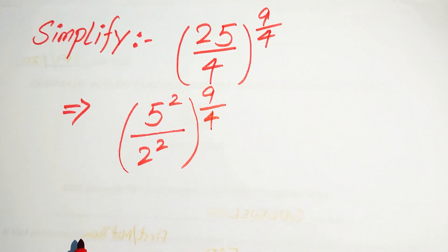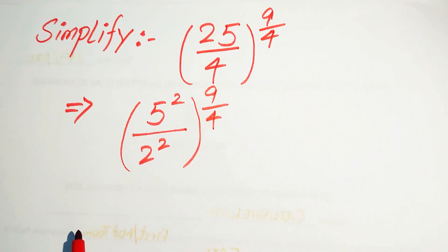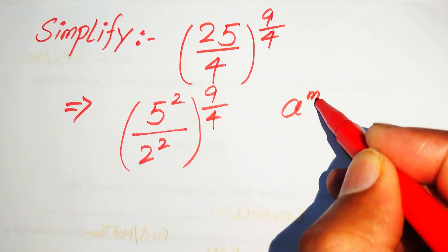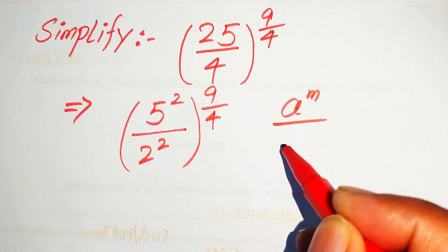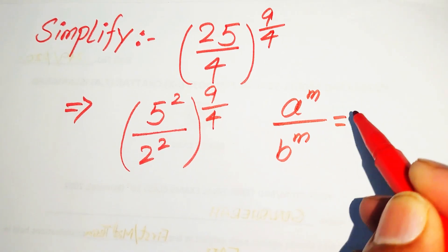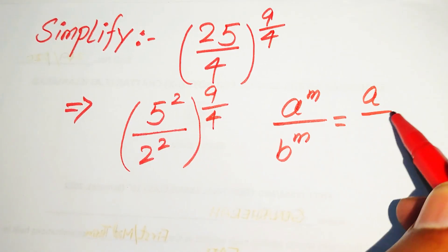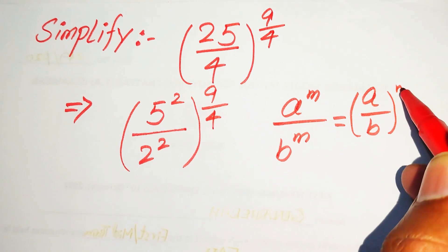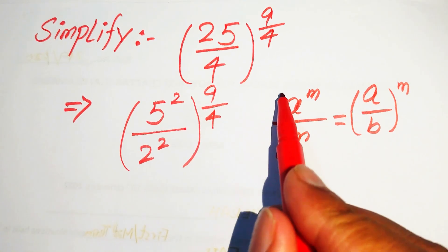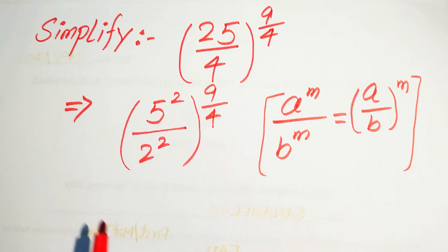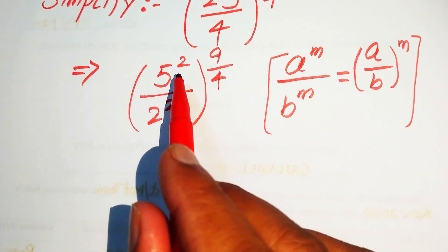After that, we use the exponential law: if we have a to the power of m divided by b to the power of m, it equals a over b to the whole power of m. Now we apply this law here.